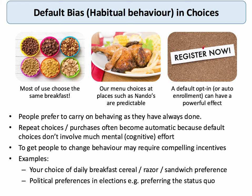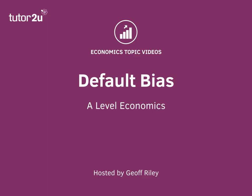Most people have quite strong habitual behavior, although there will be varying degrees. In behavioral economics, changing the default choice often requires a significant change in the framing or the choice architecture that we put in front of people. That is the essence of the default bias.